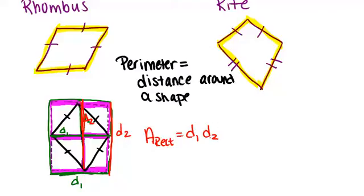And in this case, our base and our height are diagonal one and diagonal two. That means that the area of the rhombus is half of that. So, the area of the rhombus is diagonal one times diagonal two divided by two.